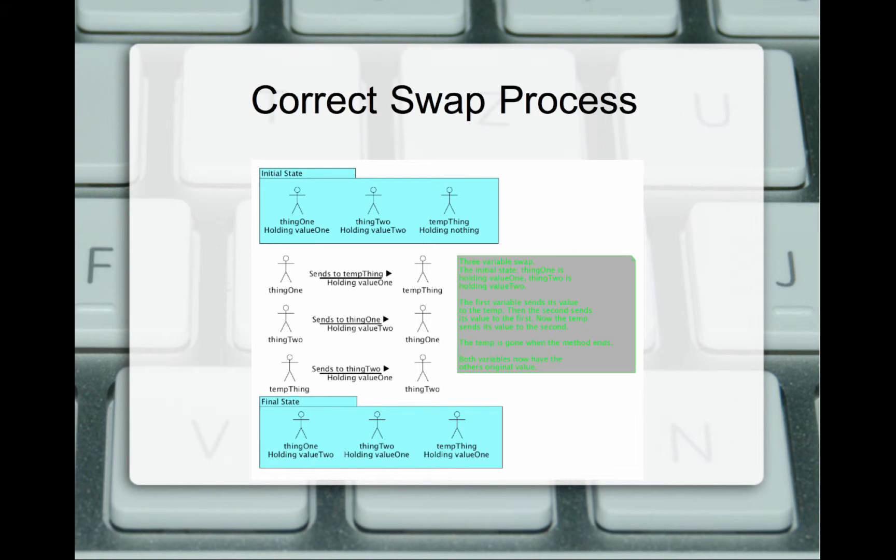Then thing two is going to send value two to thing one. So we have temp thing holding value one, thing one holding value two, and thing two holding value two. But because we have temp thing, temp thing is going to send to thing two value one. At the end of it, we have our final state. We have thing one holding value two, thing two holding value one, and temp thing holding value one and getting ready to be deleted.